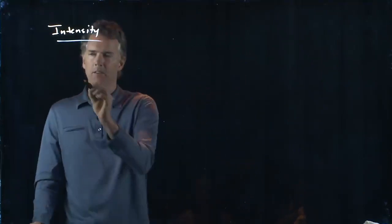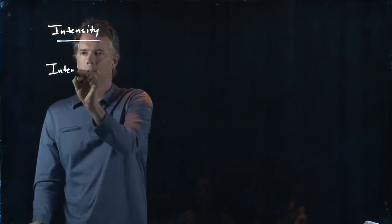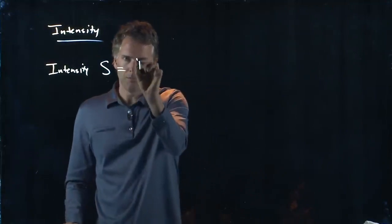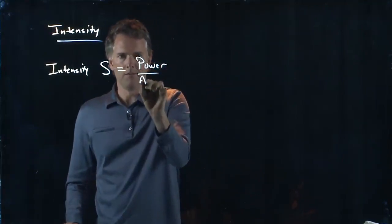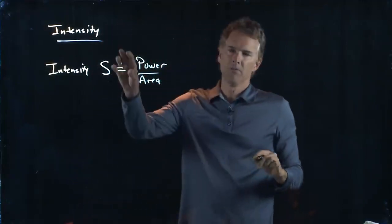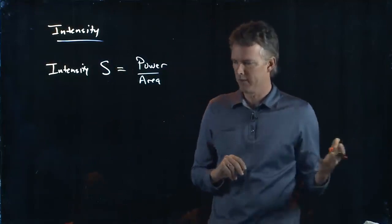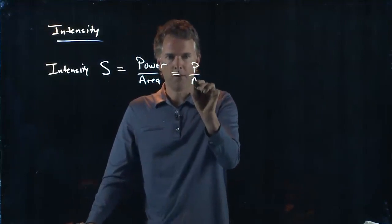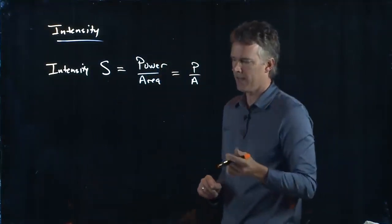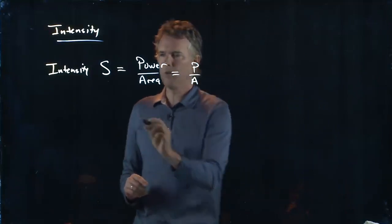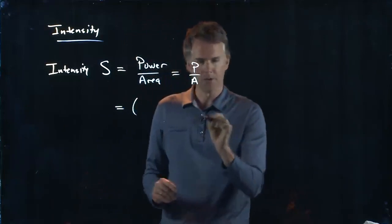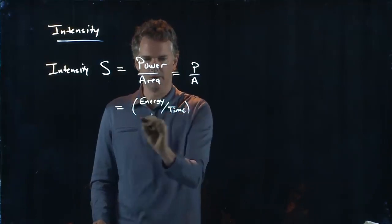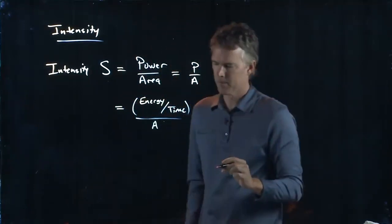So let's talk about intensity. Intensity, we actually are going to write with an S. S is power divided by area. The reason that we use an S is this comes from something called the Poynting vector. And the Poynting vector, traditionally, they use an S. So power is P, area is A, but we know that power is energy per time.